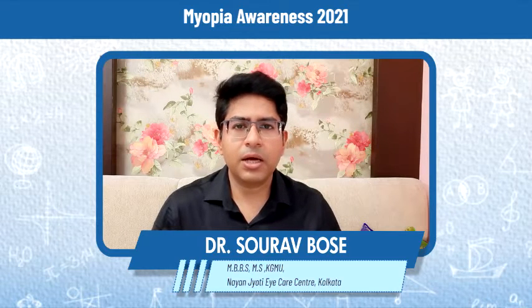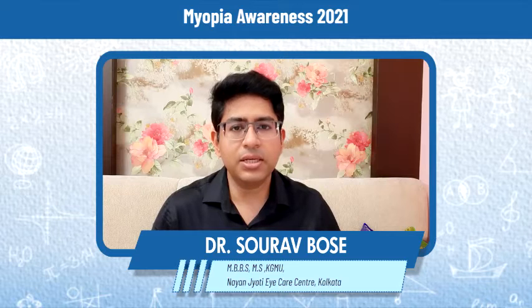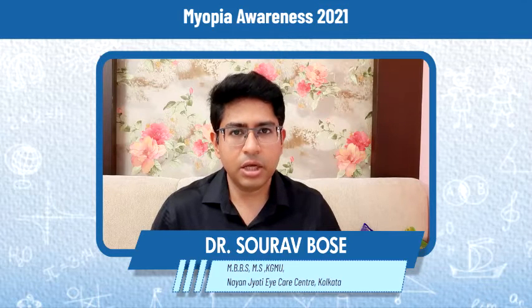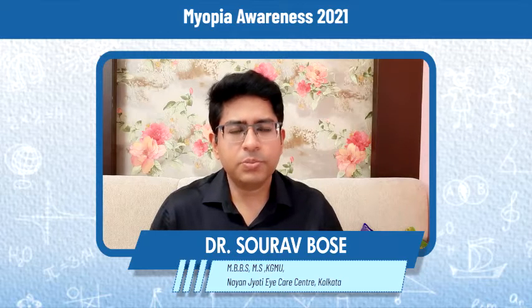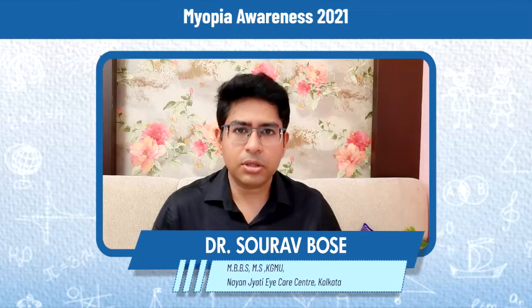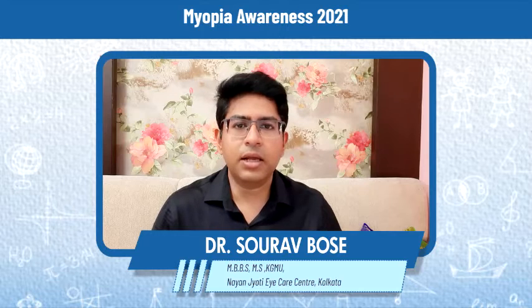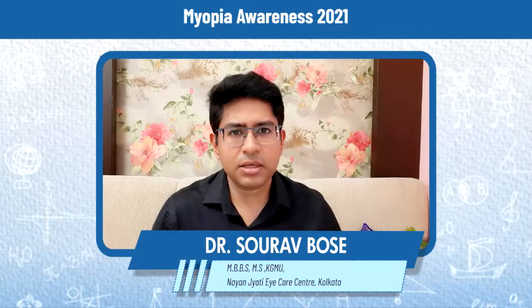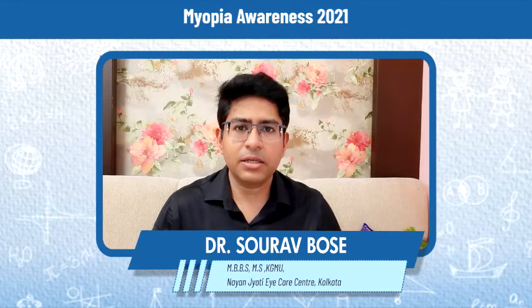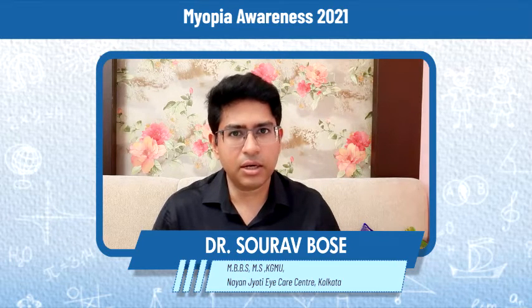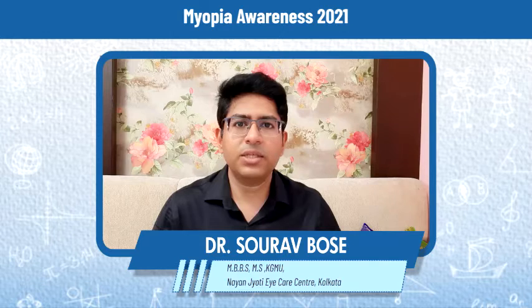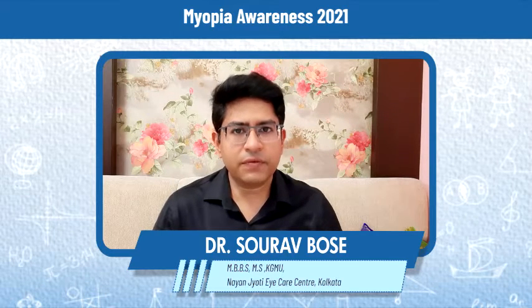So what is myopia? Simply speaking, myopia is the inability to see distant objects clearly, with clear near vision. Myopia is basically caused by increased length of the eyeball. The length of the eye increases, and the focus of the light, instead of being on the retina, falls in front of the retina, and hence whatever we see becomes blurry.